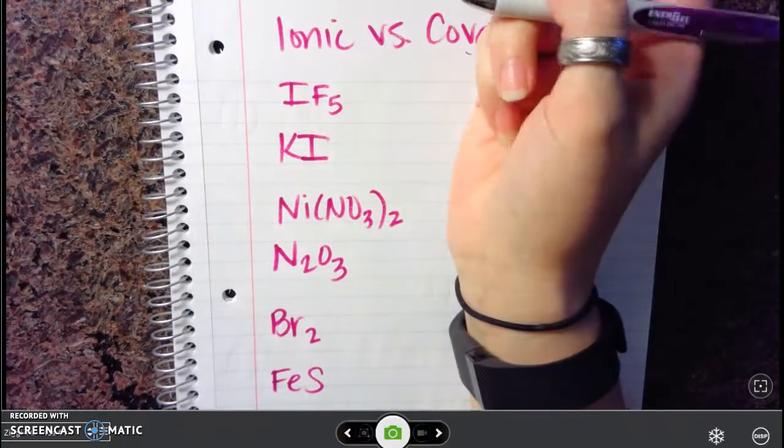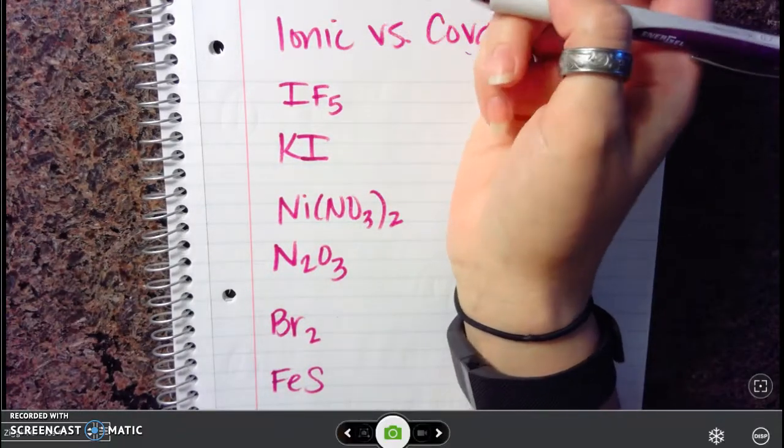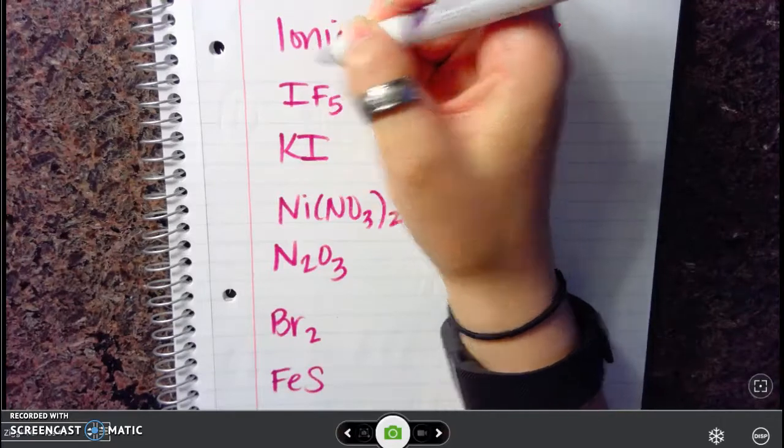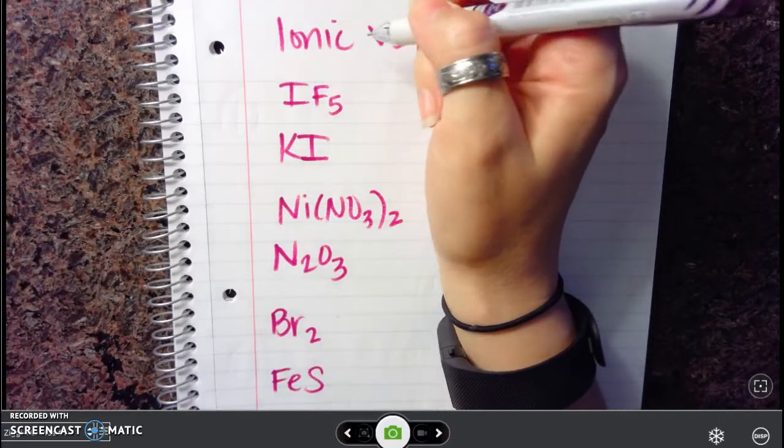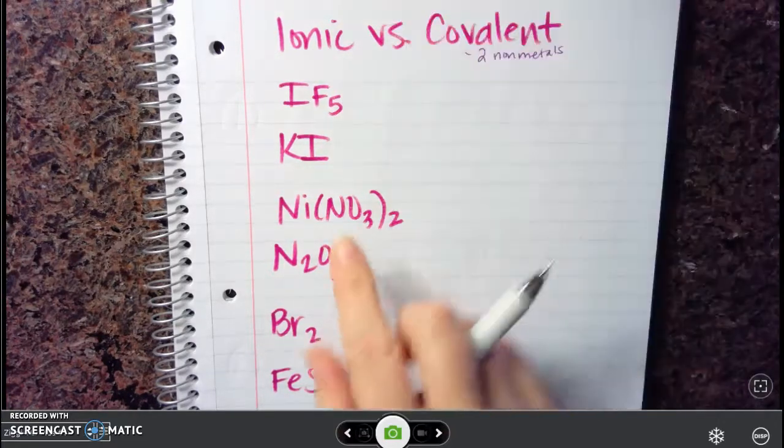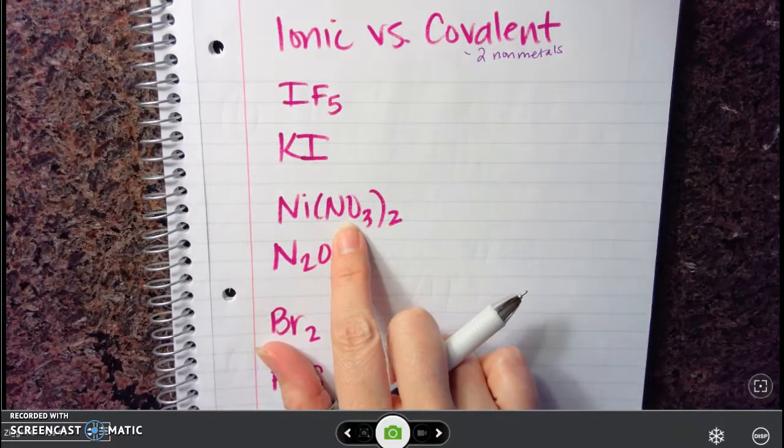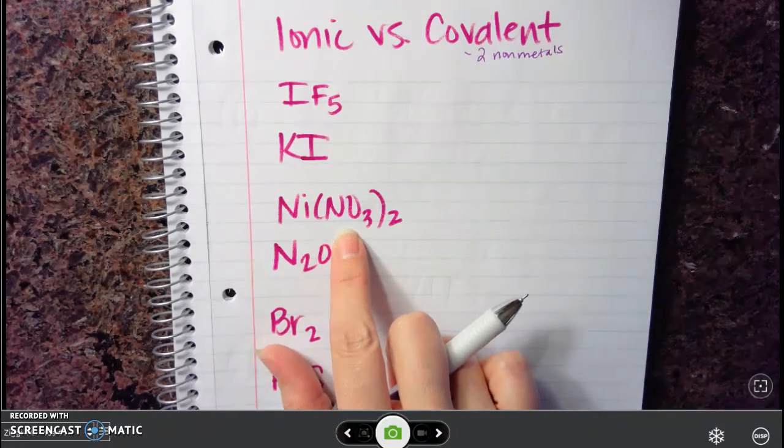If you have an ionic bond, these are going to have a cation and an anion. Your cations are typically metals, your anions are typically non-metals. But we do have your polyatomic ions that substitute in as a cation or an anion.